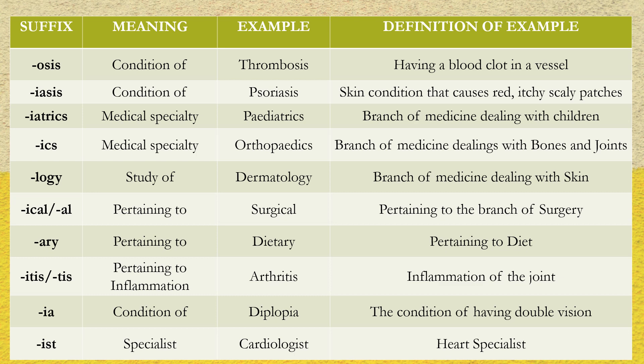Let us quickly understand these key examples. 'Thrombosis' uses '-osis' as a suffix, meaning the patient has a blood clot in the vessel. 'Psoriasis' uses '-iasis,' referring to a skin condition causing red, itchy, scaly patches. '-iatrics,' as in 'pediatrics' or 'geriatrics,' denotes a medical specialty — pediatrics deals with children, while geriatrics deals with older people.